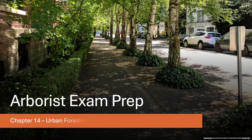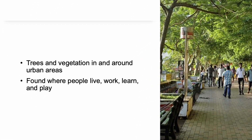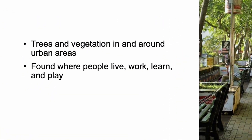Chapter 14: Urban Forestry. Urban forests refer to trees and vegetation located in and around urban areas. These include trees along streets, in parks, around schools and businesses, and even in residential yards. Rather than focusing strictly on what defines a city, it's more useful to think of urban forest as the green infrastructure where people live, work, learn, and play.